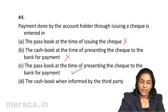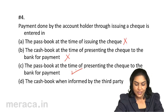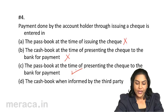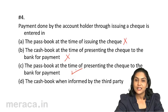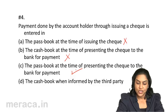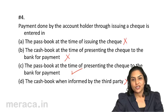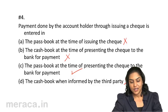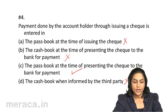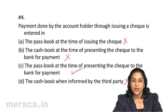It can be entered in the pass book only when it is presented at the bank. Option D — entered in the cash book when informed by a third party? No, we enter the check in the cash book when we issue it; we don't wait for intimation from a third party. So the correct choice here is C.